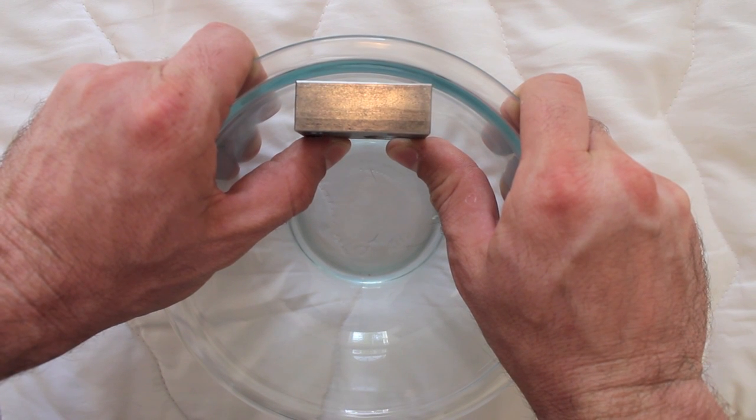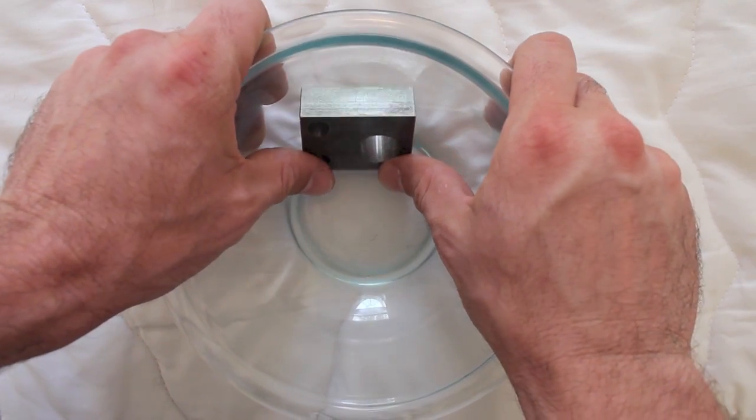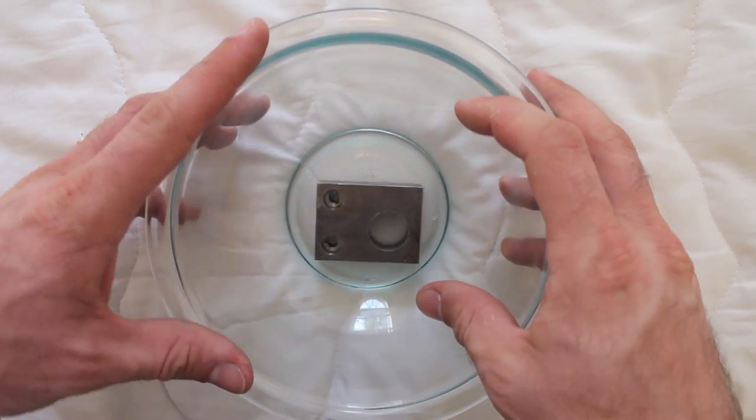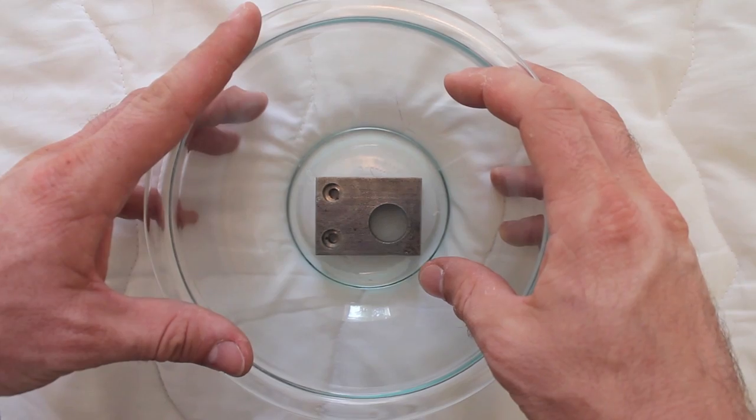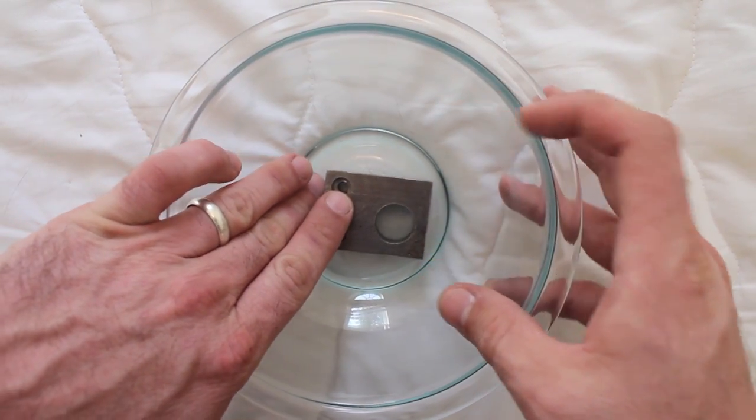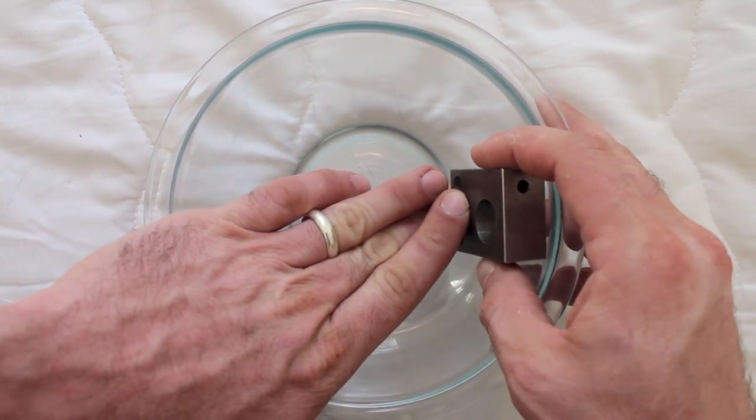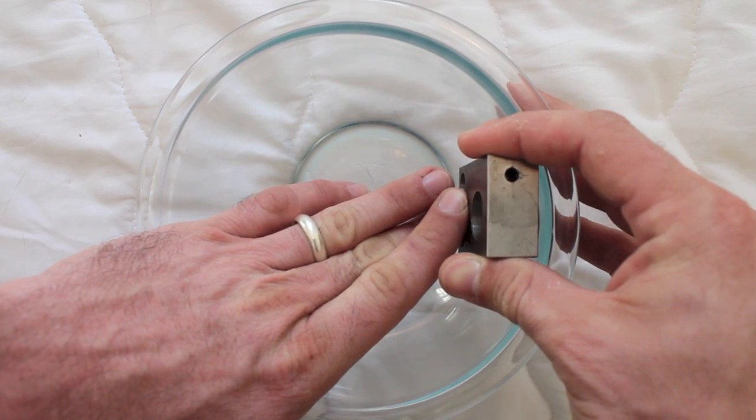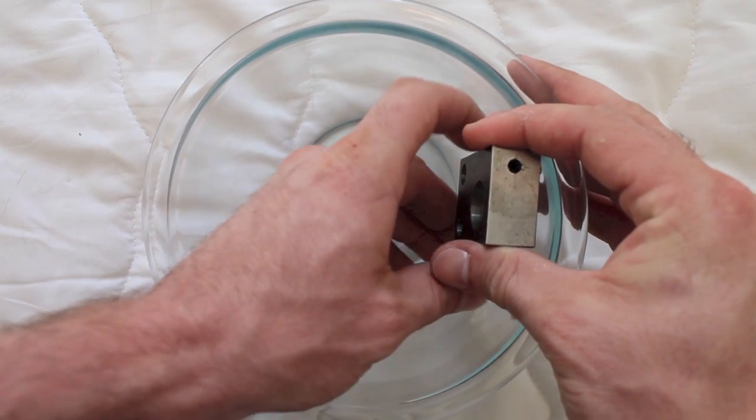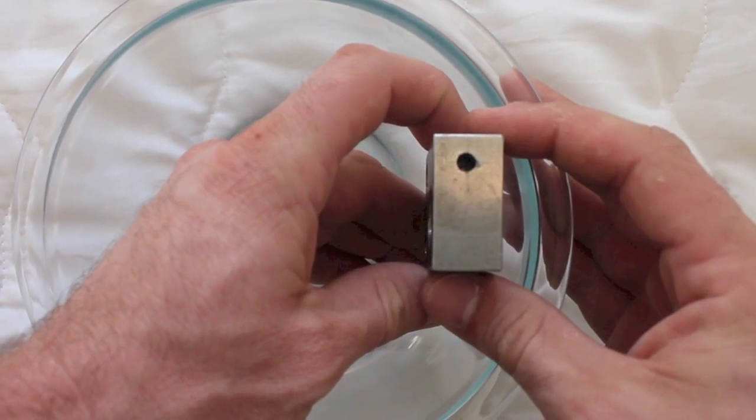To determine the right side view, place the part back in the middle of the bowl with the front view facing you. Now slide the part up the side of the bowl to your right. We now see the right side view of the part.